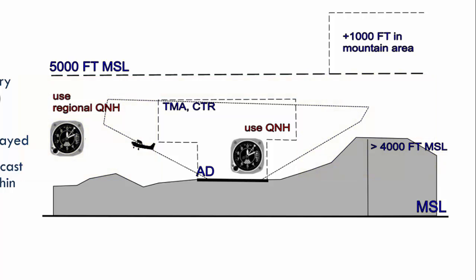The regional QNH is the lowest forecast QNH for any aerodrome within that region. That means if you are using the lowest QNH in the region, you are using the QNH of the highest aerodrome in this region. With this setting on your altimeter, you never read an altitude at any aerodrome less than the aerodrome elevation in this region above mean sea level. In the United States, QNH is given in inches of mercury, and in Europe QNH is given in hectopascals.